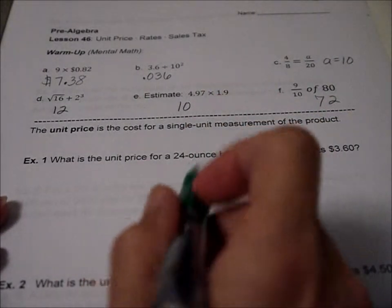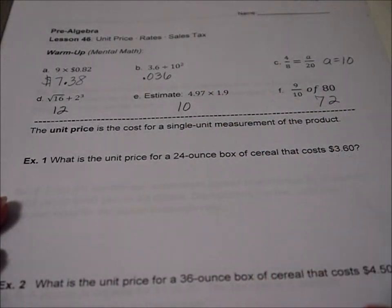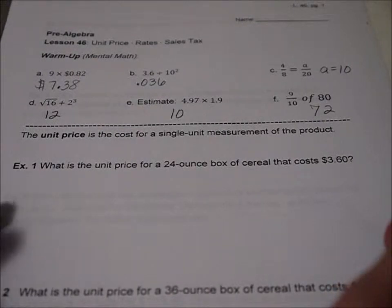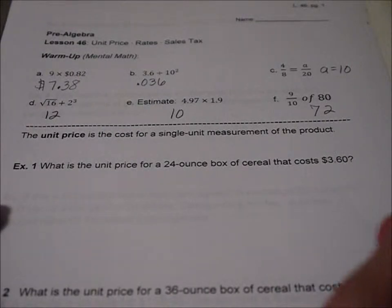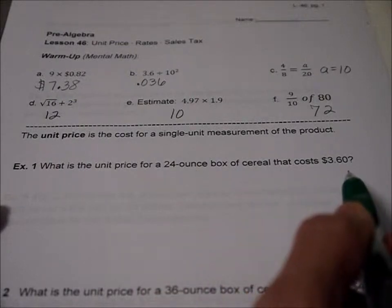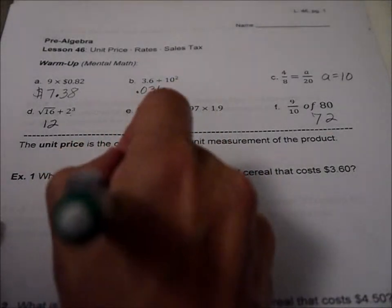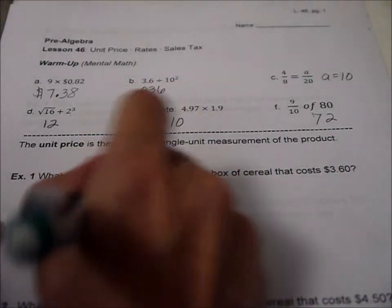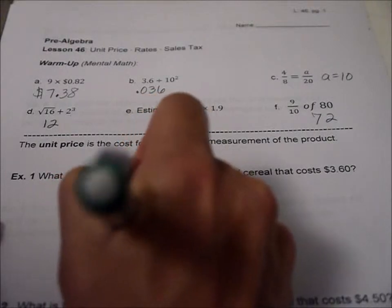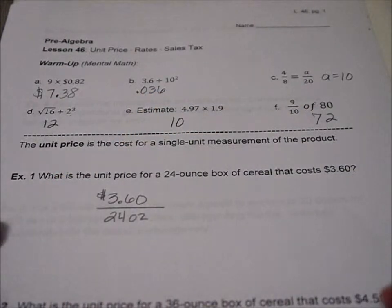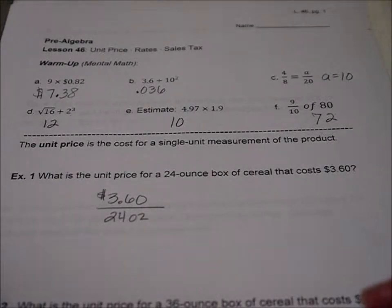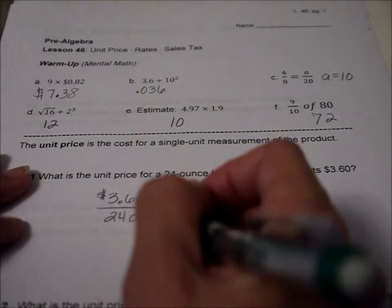So let's go ahead and give this one a shot. What is the price? So you've got 24 ounces for $3.60. What we want to do, a unit price is how much one ounce is. So if 24 of them cost $3.60, how much is just one of them? Well, how we do that is we take your total price and divide it by the units.